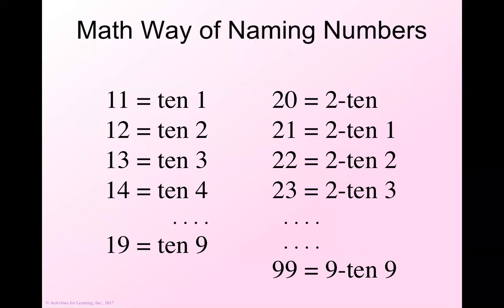That's what we're going to call the math way of counting. 10, 1, 10, 2, 10, 3, 10, 4, all the way down 10, 9. Guess what comes next? 2, 10, 2, 10, 1, 2, 10, 2, 2, 10, 3, all the way down 2, 10, 9, 3, 10, all the way down 9, 10, 9.